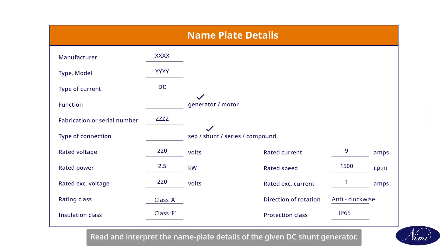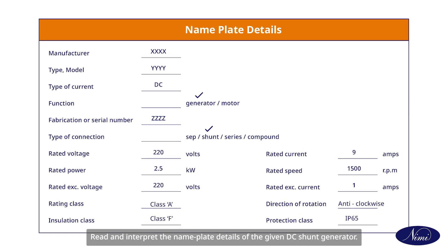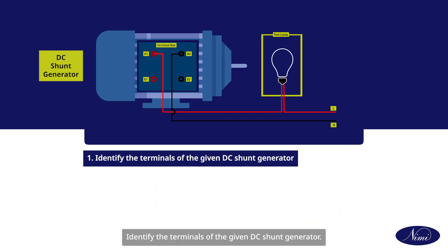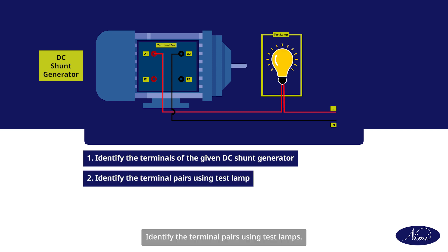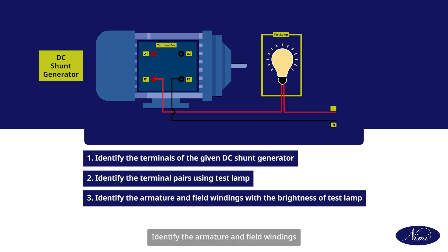Read and interpret the nameplate details of the given DC shunt generator. Identify the terminals of the given DC shunt generator. Identify the terminal pairs using test lamps, and identify the armature and field windings with the brightness of the test lamp.